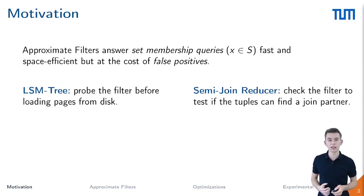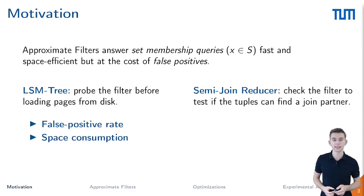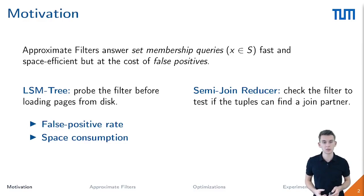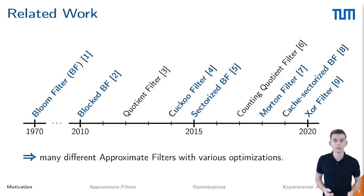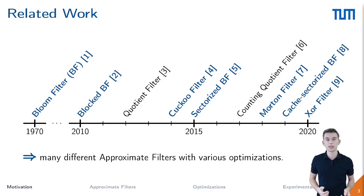Although we use an approximate filter in both applications, the requirements differ. In an LSM tree, the expensive disk accesses dominate the runtime and thus the false positive rate is decisive. In addition, only a limited memory budget is available, so space consumption is also crucial. For query execution, on the other hand, the overhead of building and probing the filter is more important. However, finding the best filter for the given use case is not trivial.